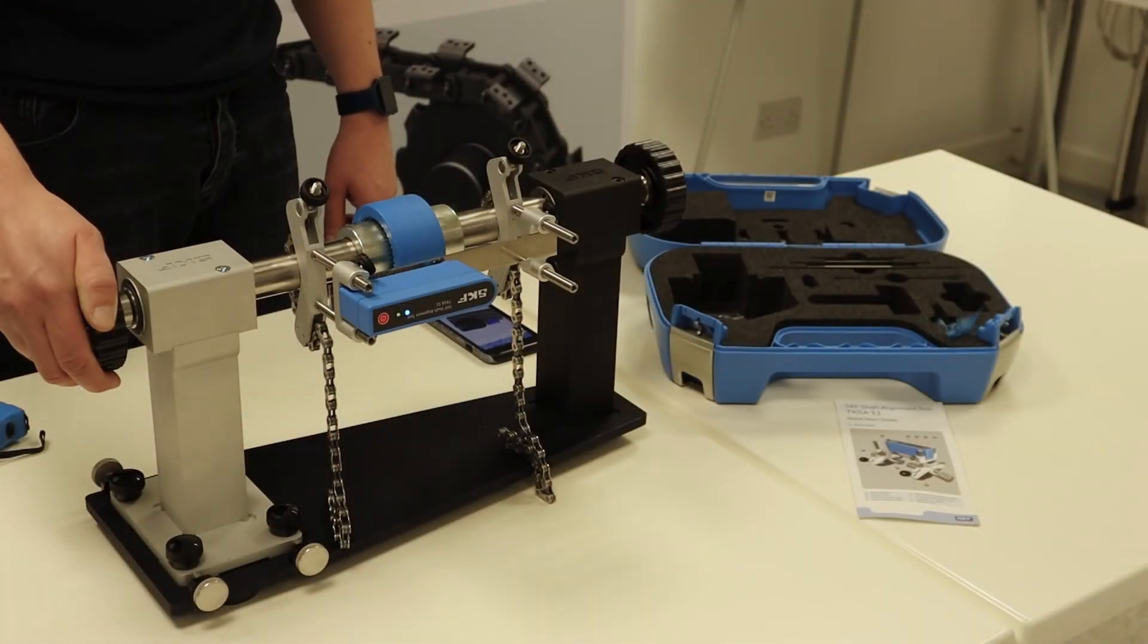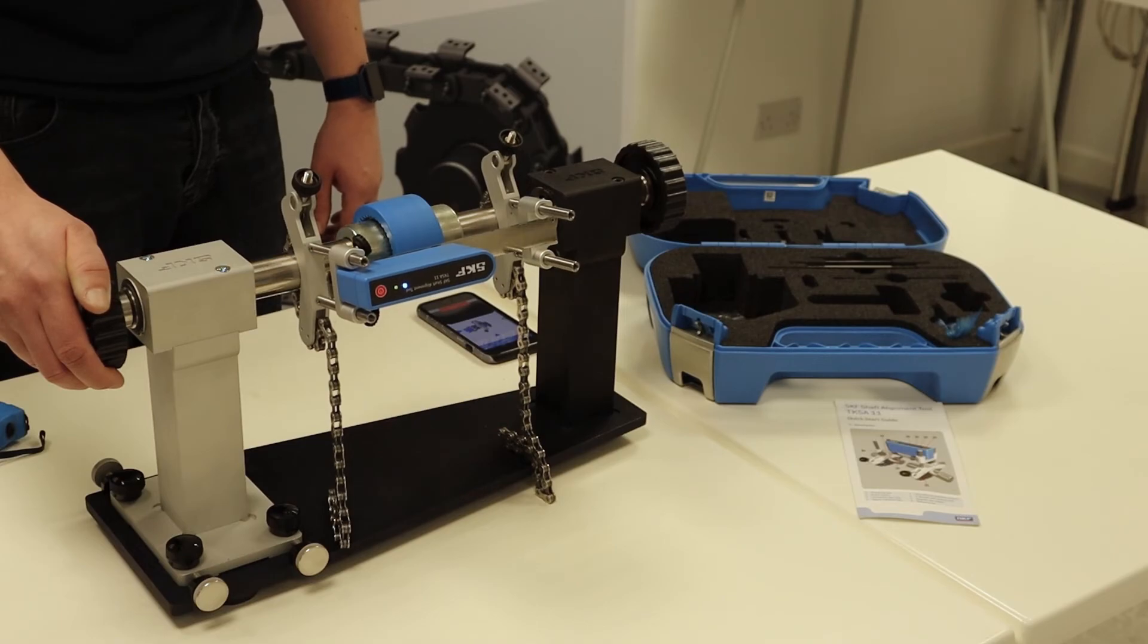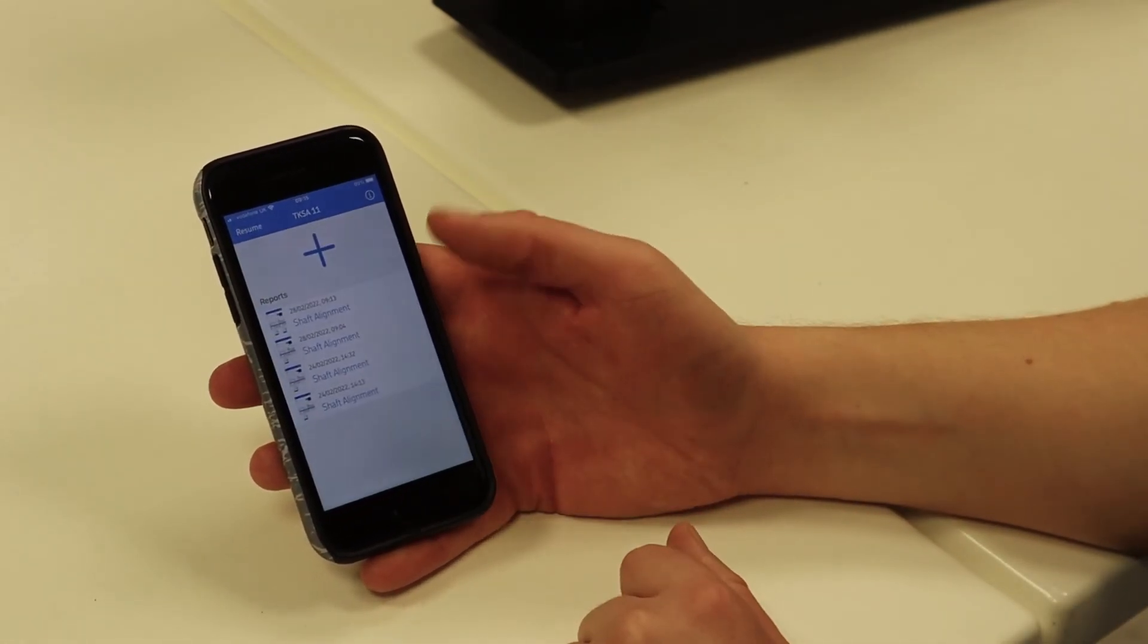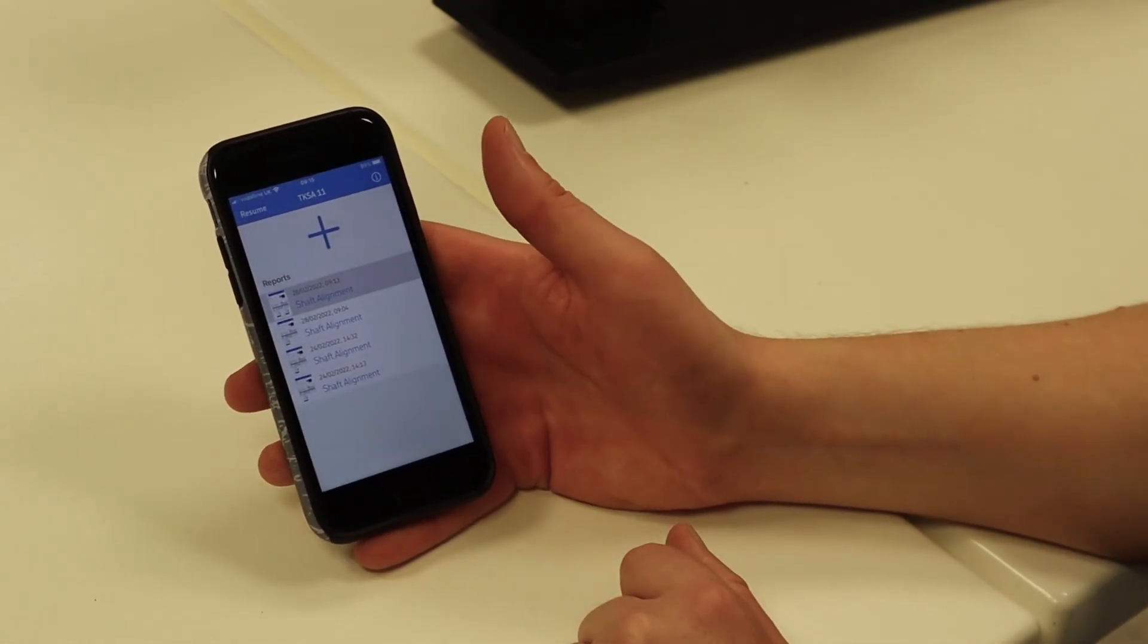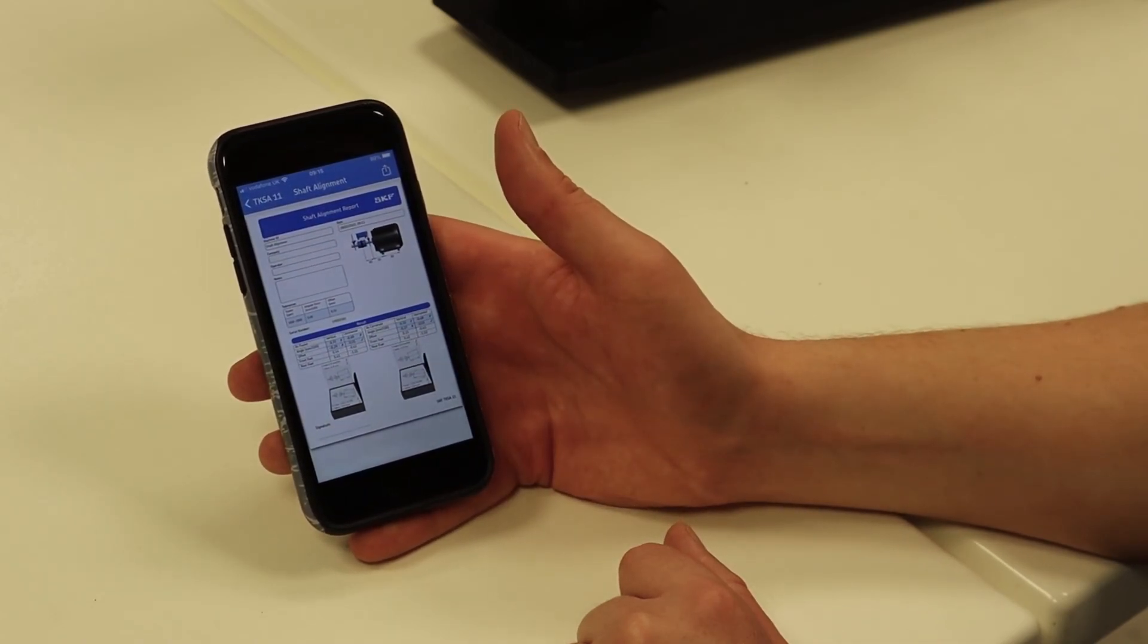You're then given the option to repeat the measurement again. When you repeat the measurement, that will then confirm if what you aligned is correct or not. It would then give me all ticks, click done, and it would then create me a report before and after, showing the differences. And I'd be able to share this however I wanted.